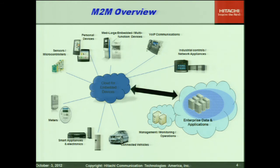Most of the time data is going through the cloud, pushing up to the enterprise out into the cloud, collecting global analytics, making decisions about what's going on. We have everything from telematics like connected vehicles, washers and dryers becoming connected, light switches, and smart meters for smart energy.